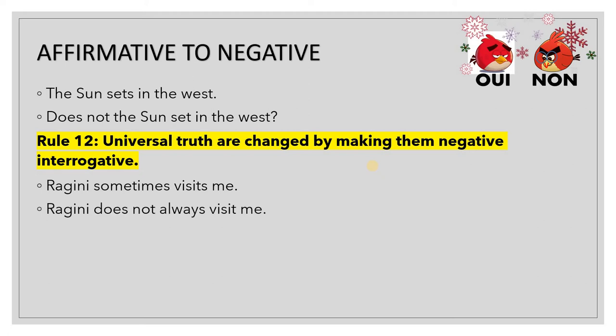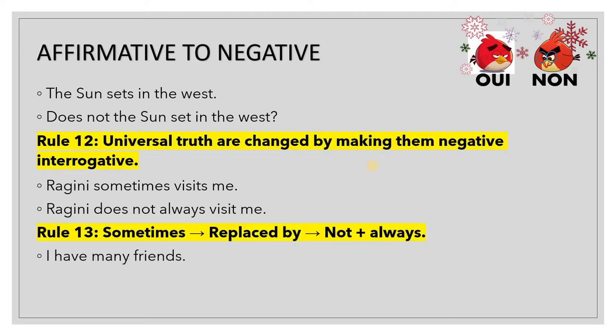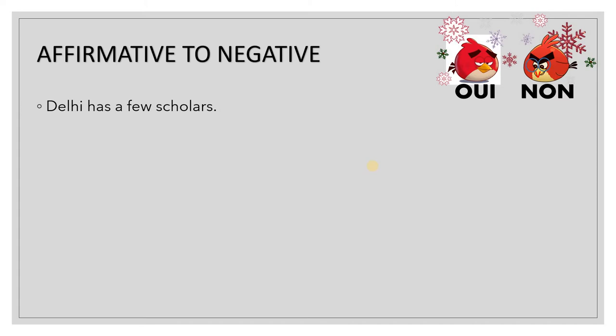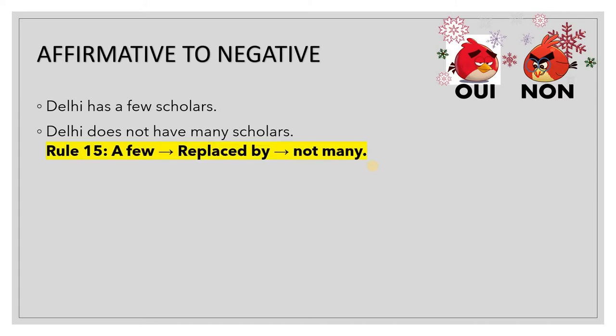'Ragini sometimes visits me' becomes 'Ragini does not always visit me' — opposites: sometimes and not always. 'I have many friends' becomes 'I do not have a few friends' — many and few are opposites. 'Delhi has a few scholars' becomes 'Delhi does not have many scholars.' So 'a few' is replaced by 'not many.'